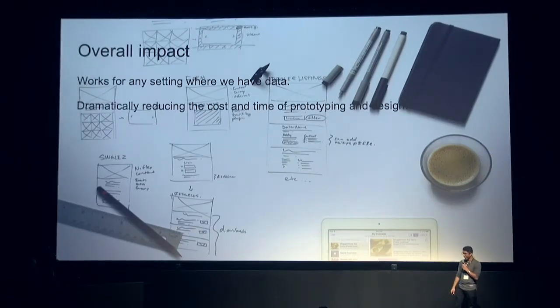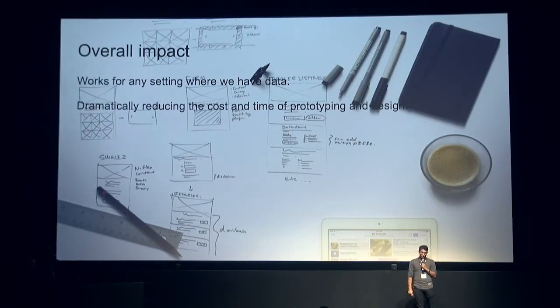Our model doesn't work for just images, birds, or animation. It works in any case where we can find an example of a final product and a sequence of instructions or a history. We're not limited in terms of type either — we can generate an image, audio, or anything. And we can take as input language, audio, vectors, discrete options, whatever you'd like. We think we can dramatically reduce the cost, time, and effort required to prototype and design anything for which we can find that sort of data.